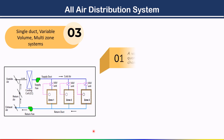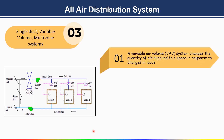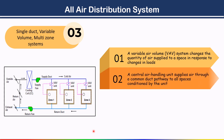A variable air volume system changes the quantity of air supplied to a space in response to changes in loads. A central air handling unit supplies air through a common duct pathway to all spaces conditioned by the unit.